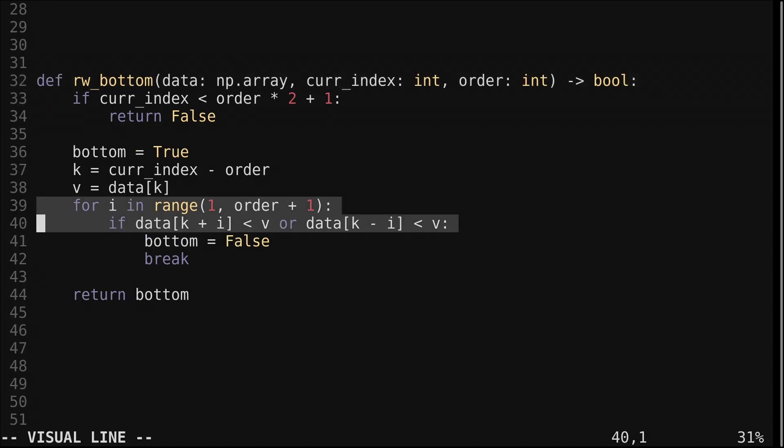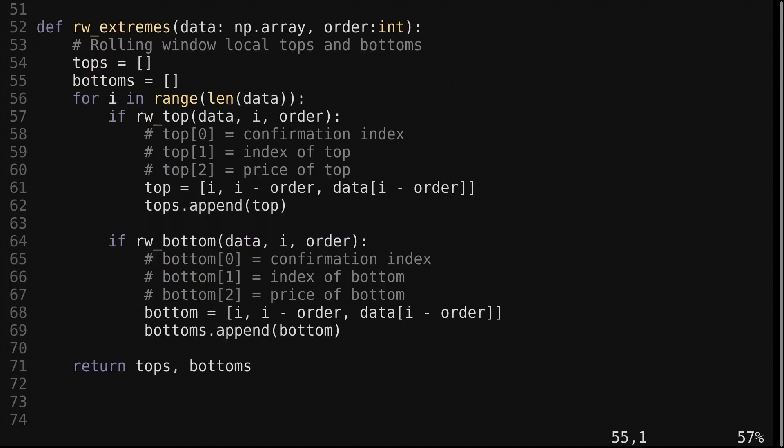Bottoms are found in the same way, but with a less than comparison instead. All local extremes can be found by looping through each candle in the data, and checking if there is a high or a low. If either is found, we record the index of confirmation, the index of the extreme, and the price of the extreme.